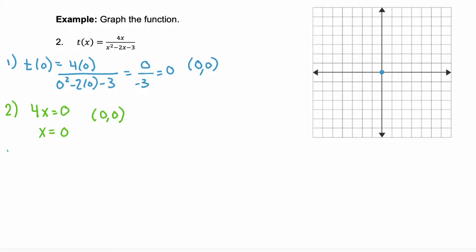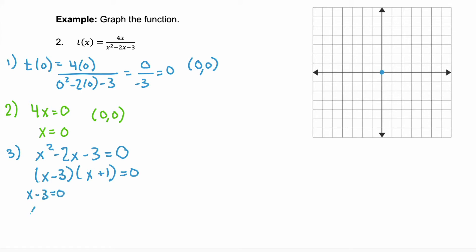Step three: we want to look for vertical asymptotes. Vertical asymptotes are based on your denominator — when is your denominator equal to 0? We factor the polynomial: x minus 3 times x plus 1 equals 0. Using the zero product property, x minus 3 equals 0 gives x equals 3, and x plus 1 equals 0 gives x equals negative 1. So we have two vertical asymptotes. Let's put those on: x equals 3 and x equals negative 1.